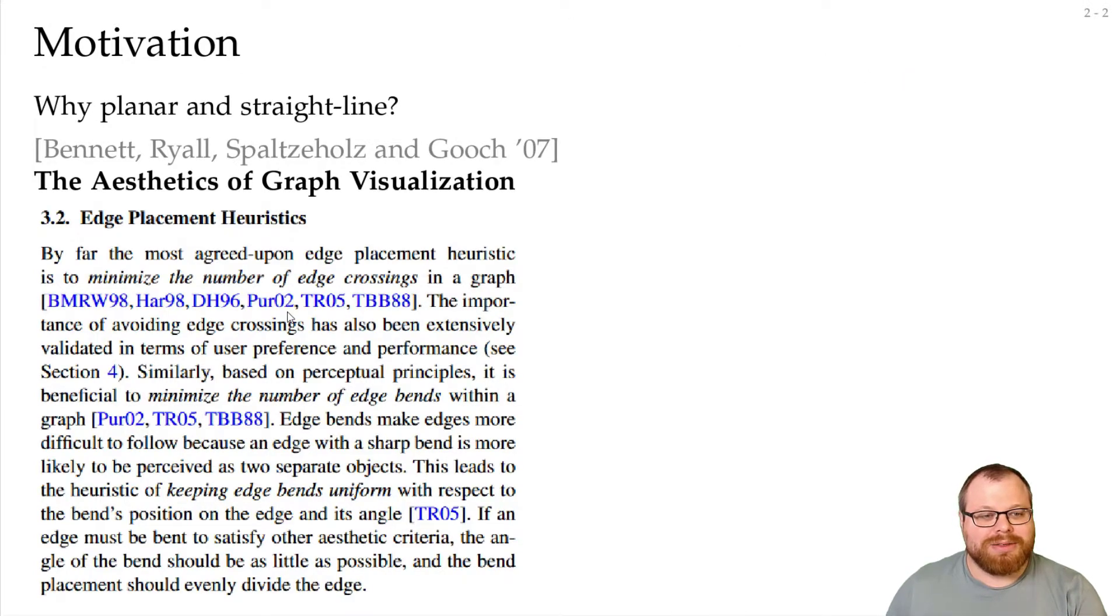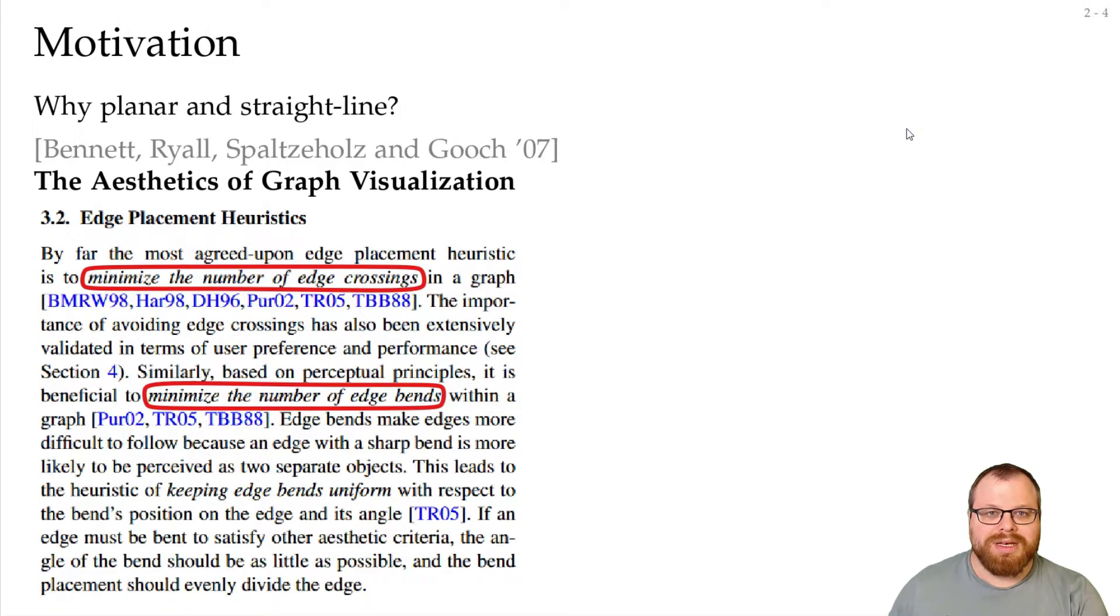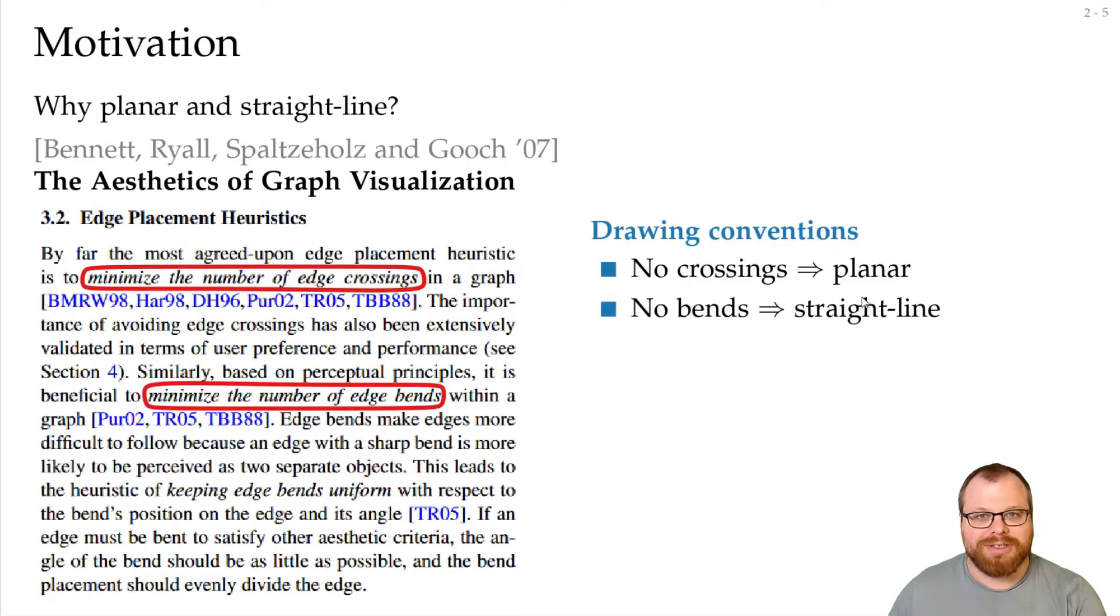As an example, I want to show you an excerpt from the paper The Aesthetics of Graph Visualization from 2007 by Bennett, Ryall, Balneavis and Gooch. In the chapter where they talk about how to place edges, they say that by far the most agreed upon edge placement heuristic is to minimize the number of edge crossings. Later they also say it's beneficial to minimize the number of edge bends. If we want to minimize something, in the optimal case we don't have anything of this. So if we have no edge crossings, we have a planar drawing, and if we have no bends, we have a straight line drawing.